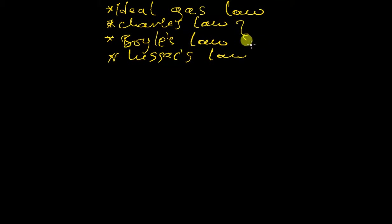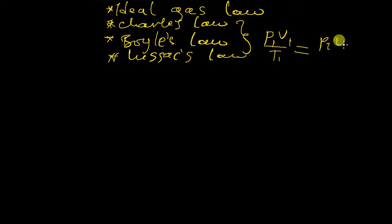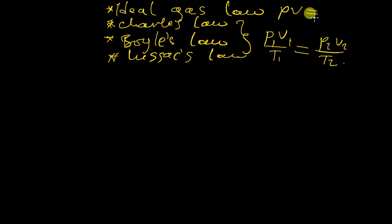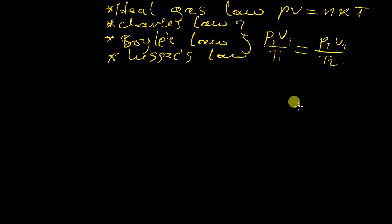The combination of these three gives us a fourth law which is P1V1 over T1 equals P2V2 over T2. Then the ideal gas law is simply PV equals nRT. Let's take a look at some examples which will require us to use either or both of these.